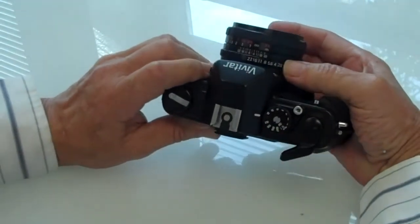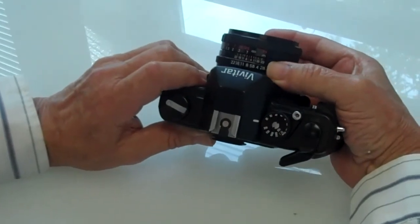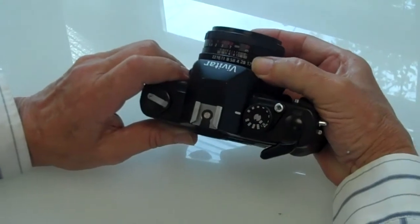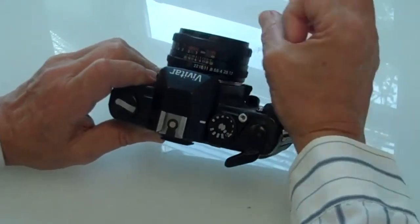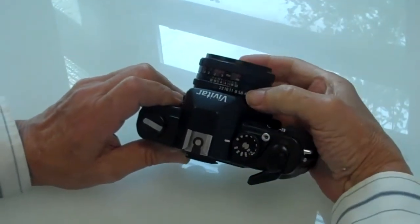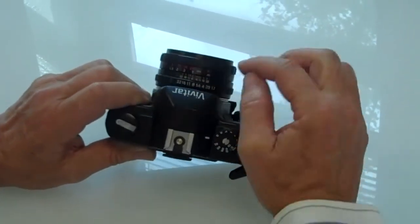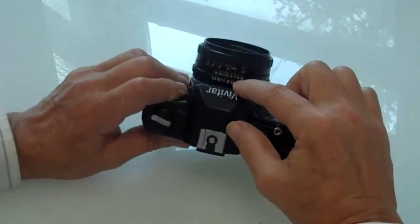There again, the aperture ring indicating your f-stop is right here. Remember they're fractions, so the higher the number, the smaller the aperture. So for today, set your aperture at f8, right next to that little orange line right there. f8, right there.